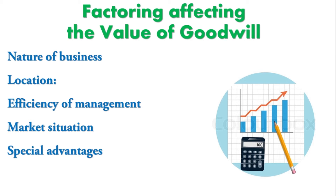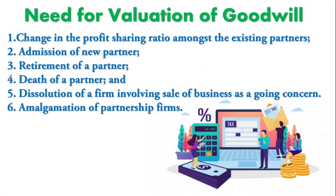Next, we have factors affecting the value of goodwill. The first factor is the nature of the business — such as stable demand for the product and location, which relates to the geographical area, whether near a city or village. Next is efficiency of management — whether they are running the business in an effective manner. Then marketing situation — for example, a monopoly gets all the benefits. And special advantages like availability of raw materials at lower rates. These are the factors which affect goodwill.